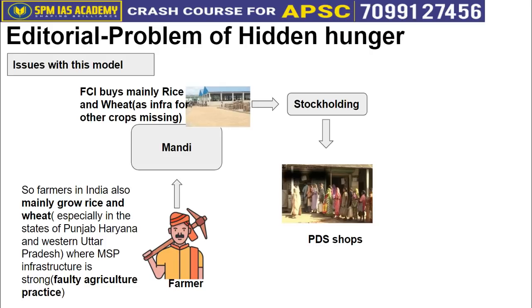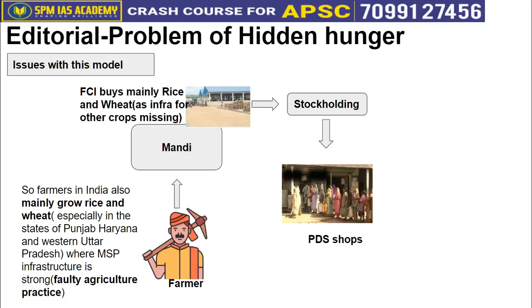While wheat naturally suits these areas' climatic and soil conditions, farmers also grow rice just because it is procured at MSP. These relatively wealthier farmers install boring pumps and motors to unsustainably extract groundwater, because rice cultivation requires a large amount of water. This leads to faulty agricultural practices.